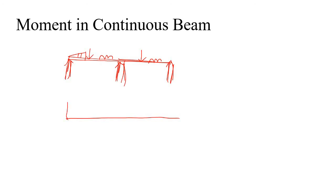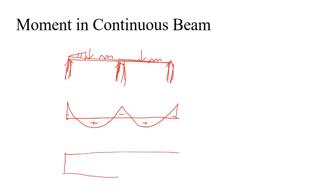What is the bending moment diagram for this type of continuous beam? At the support you will have some bending moment and at the span you will have some as well. The final bending moment diagram looks something like this — this is the sagging or positive bending moment, and these are the hogging or negative bending moment. Due to the sagging bending moment, cracks will occur at the bottom, and due to the hogging bending moment, cracks will occur at the top.